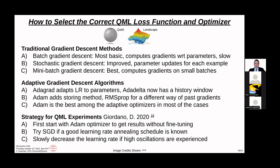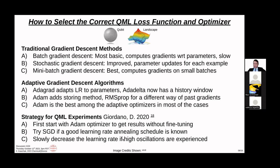One strategy for selecting the correct conditions: first start with Adam optimizer to get results without fine-tuning, but adjust the learning rate — try going up a little; if it keeps getting worse, try going down. You should always try stochastic gradient descent after that, if a good learning rate and annealing schedule is known. Slowly decrease the learning rate if high oscillations are experienced — like going down a well with a marble too fast, it'll skip.